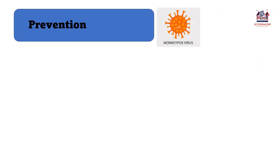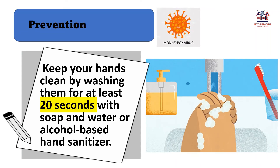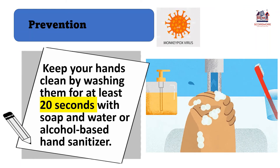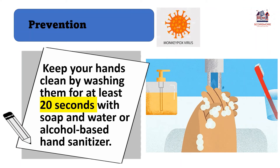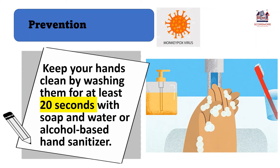Now we know what monkeypox is, so how do we prevent it? Keep your hands clean by washing them for at least 20 seconds with soap and water or an alcohol-based hand sanitizer — just like singing the happy birthday song while washing, similar to what we do to help prevent COVID-19.